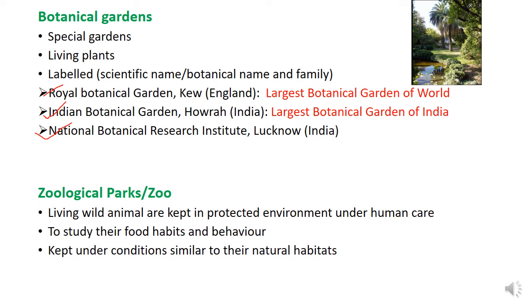The next taxonomic aid is the Zoological Park. These are the parks we know as zoos, and kids are very excited to go there. Here we have living animals under protection, under human care, and in a protected environment. For us it is for recreation and enjoyment, but taxonomists use the zoological park as a taxonomic aid because they study the animals' food habits and behavior.